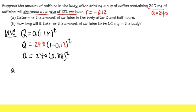So for question a, it says we are going to find out the amount after three and a half hours. So that means t is equal to 3.5.